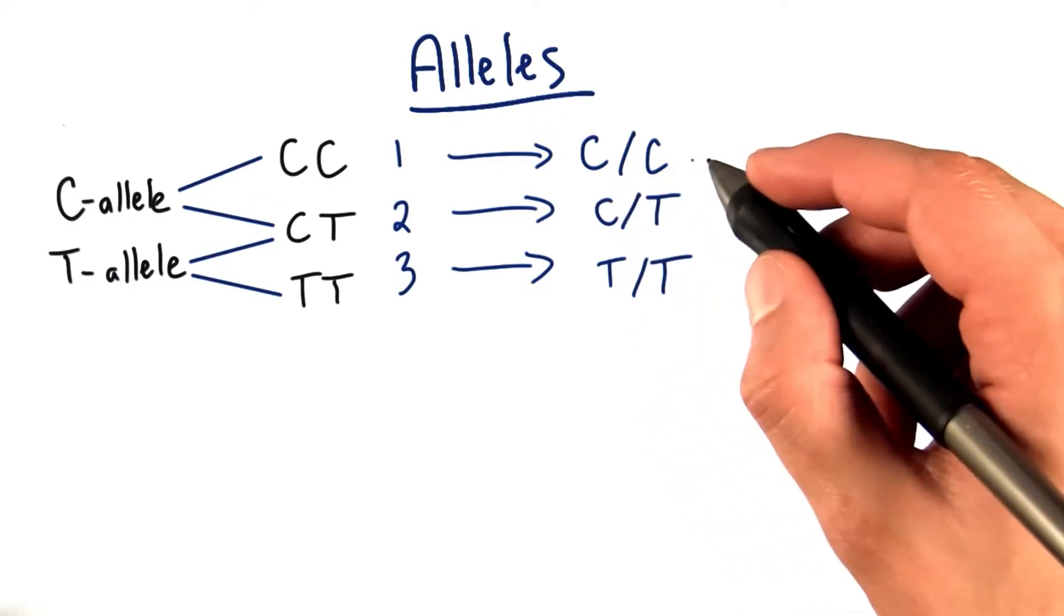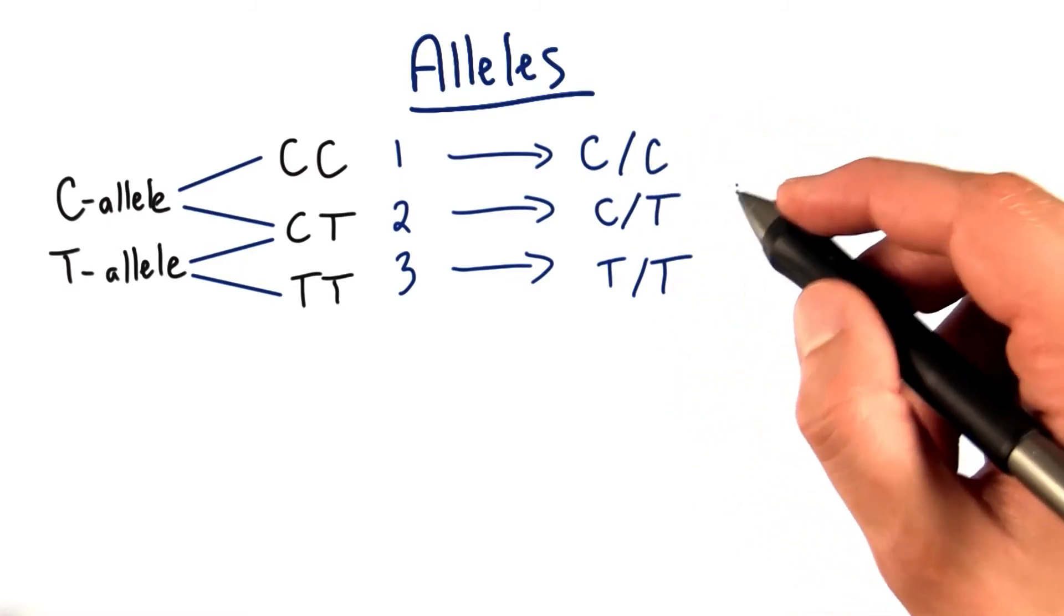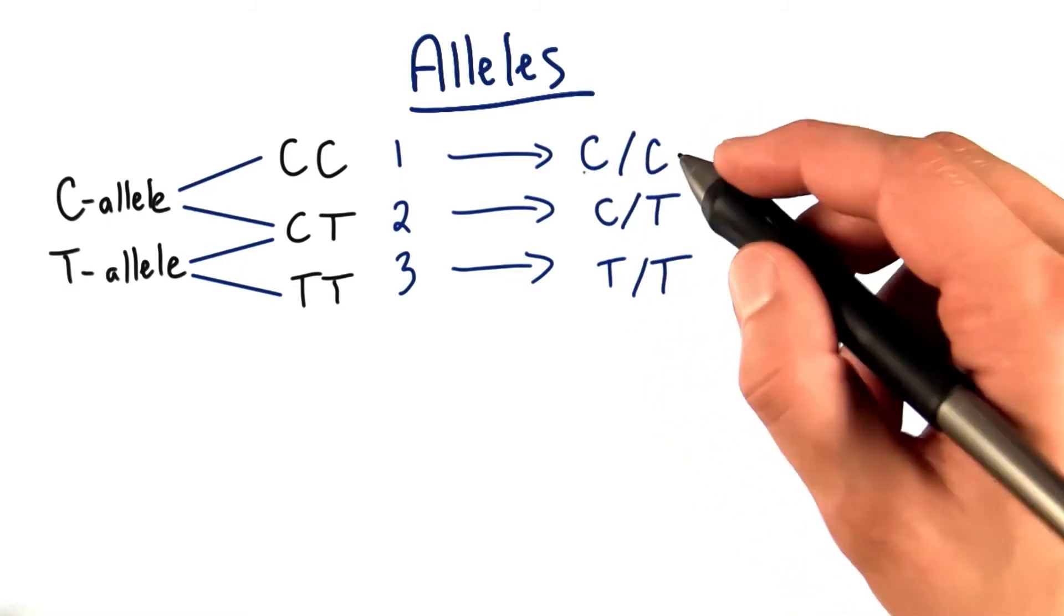And so that's how we're going to actually refer to two different alleles from here on out in our class. C slash C, although I'll probably just say CC.